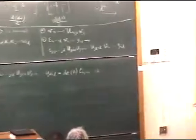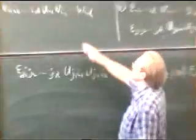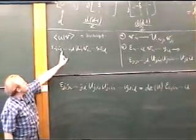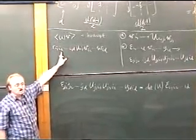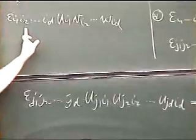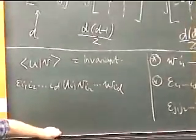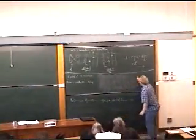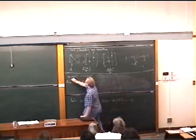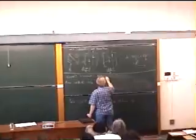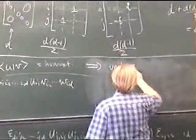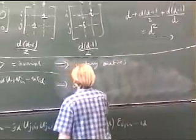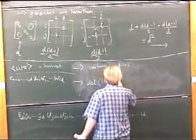So now what we learn is, if we have both of these invariants, for that to be invariant we need to look at unitary matrices. For this to be invariant, we are forced to have determinant equal to 1. So this statement implies we are dealing with unitary matrices, and this statement implies the determinant of our matrix is equal to 1.